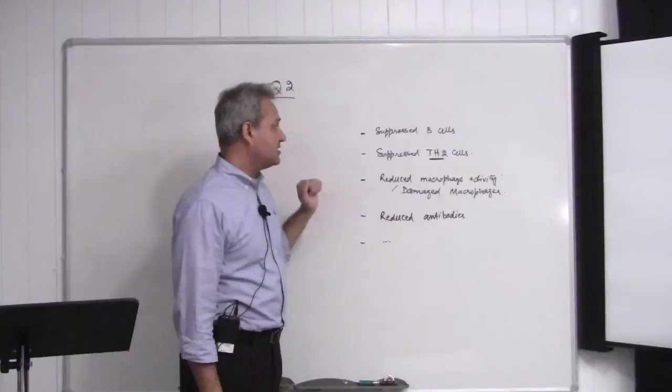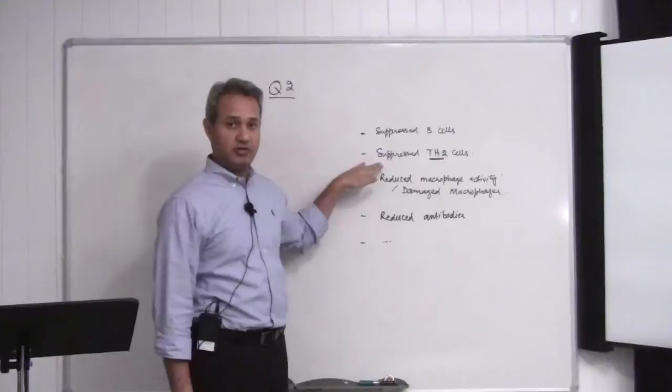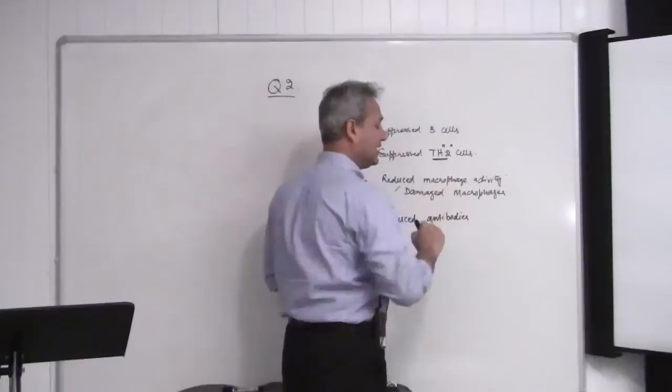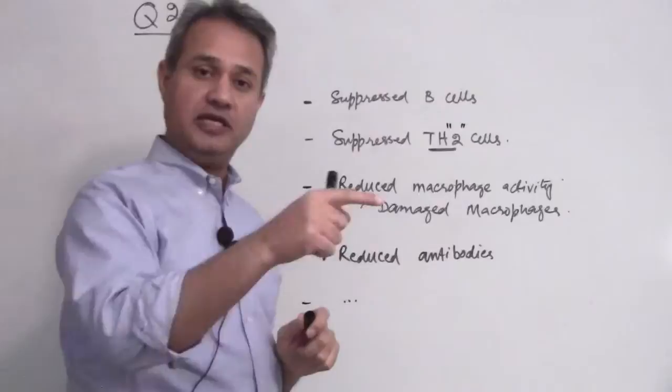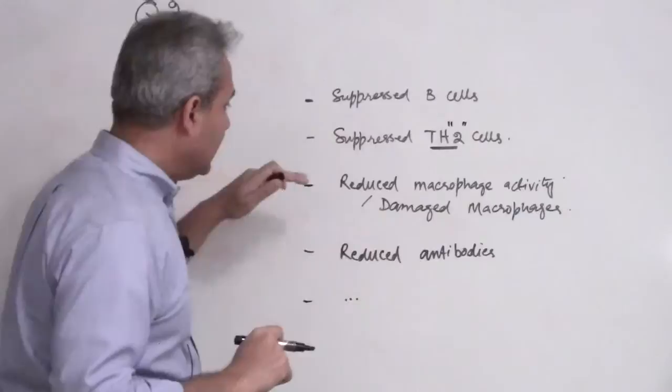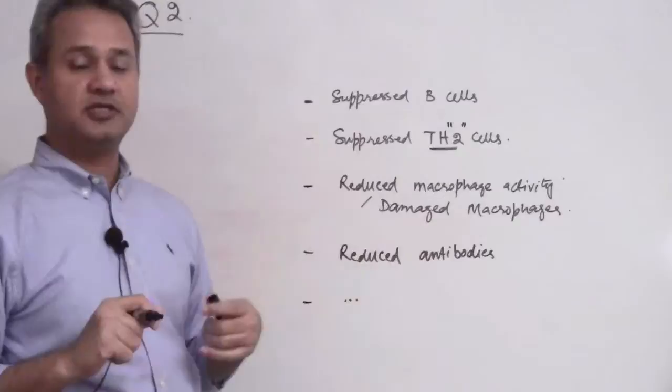The choices are: is it because their B cells are not functioning correctly — suppressed B cells? Is it because their T helper 2 cells are not functioning correctly — suppressed T helper 2 cells, instead of T helper 1 cells? Then there is reduced macrophage activity or damaged macrophages, and finally reduced antibodies or other such options.